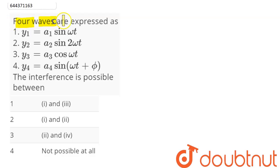Question is: 4 waves are expressed as y1 = a1 sin ωt, y2 = a2 sin 2ωt, y3 = a3 cos ωt and y4 = a4 sin(ωt + φ). The question is: the interference is possible between.